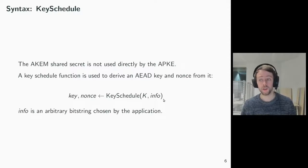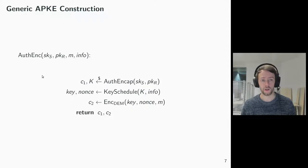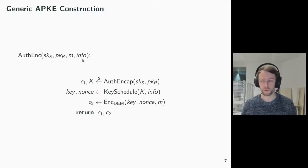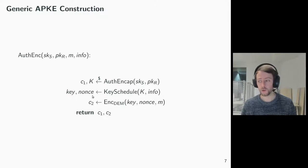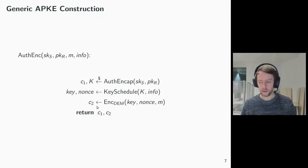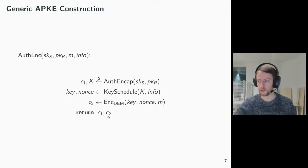Now we have seen all ingredients necessary to understand the generic construction of APKE. The authenticated encryption function takes a sender secret key, a receiver public key, a message and an info bit string. It uses the authenticated KEM to generate a shared secret, then computes key and nonce using the key schedule and finally encrypts the message using a symmetric encryption scheme. The APKE ciphertext consists of the ACAM encapsulation ciphertext and the symmetric encryption ciphertext.